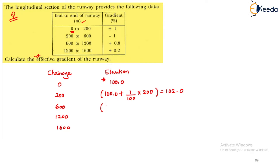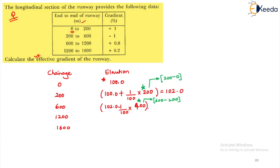Similarly, for the next chainage. The gradient here is negative, so we calculate 102.0 minus 1/100 of 400. This 400 is the difference: 600 minus 200. That gives us an elevation of 98.0.